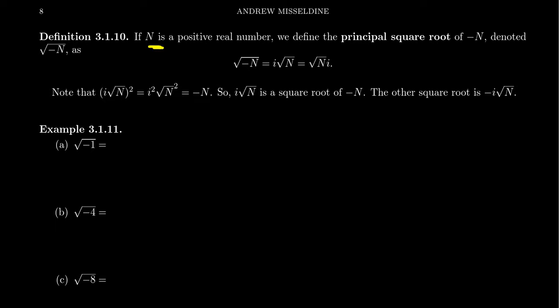Because, for example, if we have some positive number capital N right here, how does one take the square root of negative N? Well, there's always two square roots, so let's first talk about the principal square root, by which we'll denote the square root of negative N right here.